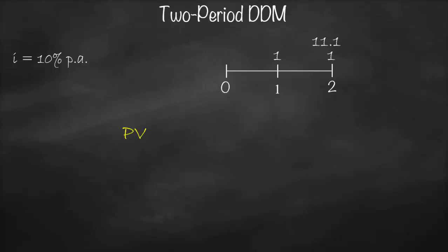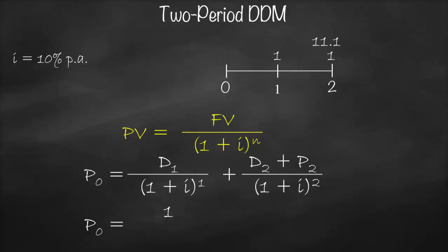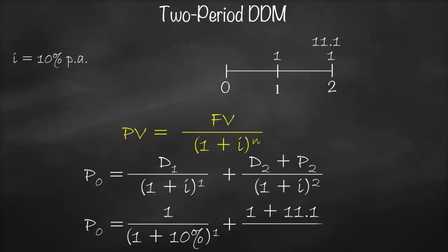We use the present value of single cash flow formula: PV = FV / (1 + i)^n. We will use this formula twice because we have a two-period dividend discount model. So the price today equals D1 / (1 + i)^1 + (D2 + P2) / (1 + i)^2. Substituting: P0 = 1 / (1 + 10%)^1 + (1 + 11.10) / (1 + 10%)^2. This gives us $10.